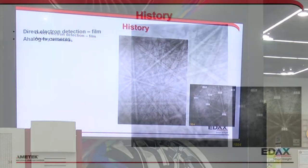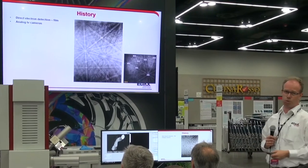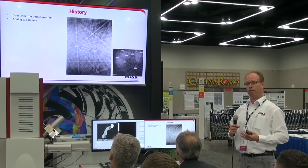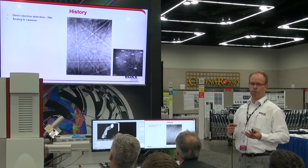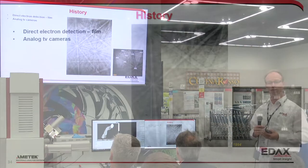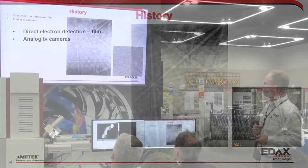In the mid to late 1980s, we moved to analog television cameras. We started with really nice patterns on film, then accepted patterns that were pretty horrible — television-rate cameras with a fixed frame rate of 30 frames per second in the US, 25 in Europe. We had to average quite a lot of frames — typically 8 to 16 — to get indexable patterns.